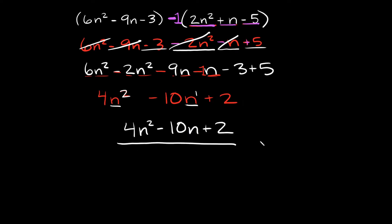So the most simplified answer right here would be 4n squared minus 10n plus 2. The last thing I want to mention is when you write your answers, make sure they are in standard form — that just means your exponents are listed from biggest to smallest. You can see we already did that: this term has a 2, this term has a 1, and then the numbers don't have anything, that's why they go at the end.